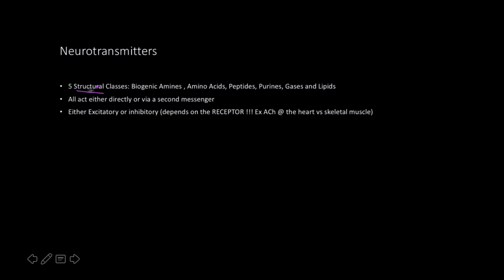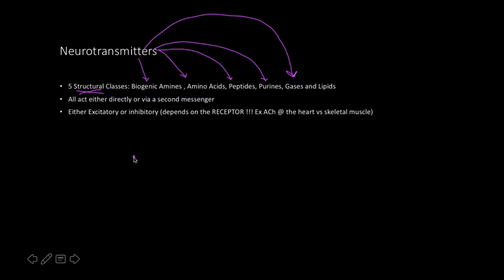For neurotransmitters, there are actually five structural classes. I'm going to arrange them based on their structure, because their structure lends to what the function is. They are known as biogenic amines, amino acids — which hopefully if you've taken biochemistry you know what that is — peptides, which are just long chains of amino acids, the purines, and lastly, and it's very controversial, gases and lipid-soluble compounds.